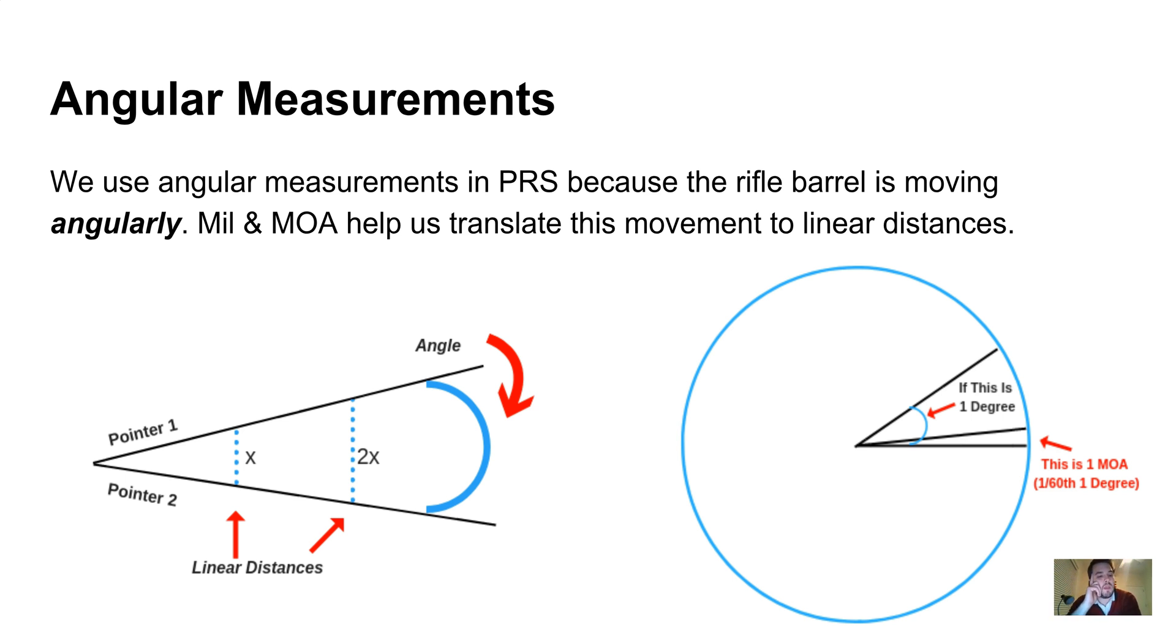If you imagine two laser pointers, just like this diagram here shows, if they're right by each other and then you bring them apart, they're going to make a corresponding angle. That angle stays the same the entire way up the lines. What doesn't stay the same are the linear distances between the lines, and that's what we use MOA to calculate.